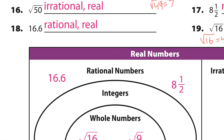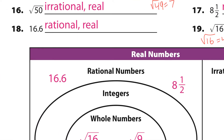Number 20: 16.6. Now 16.6 is 16 and 6 tenths — there's your fraction — and that's why it's rational. Everything we're dealing with is also going to be real.